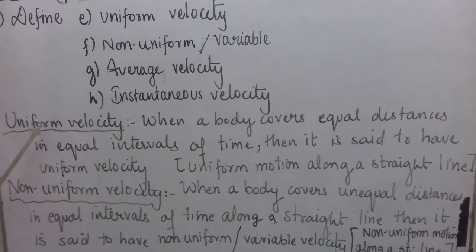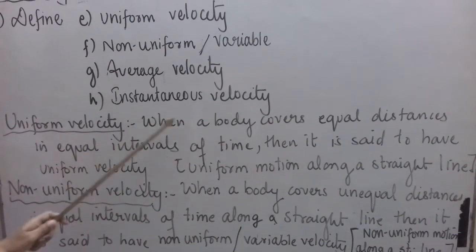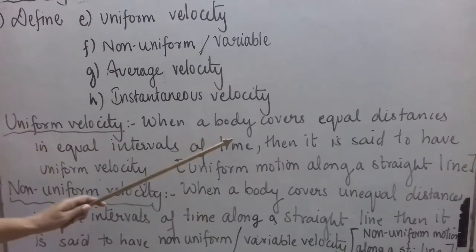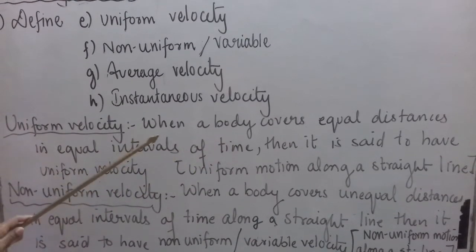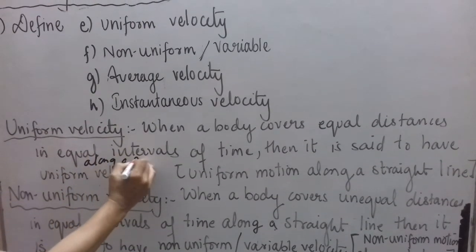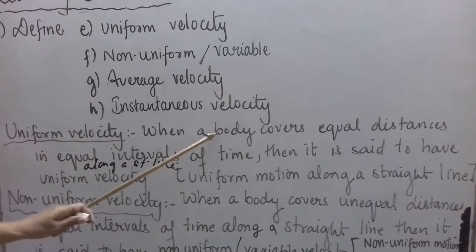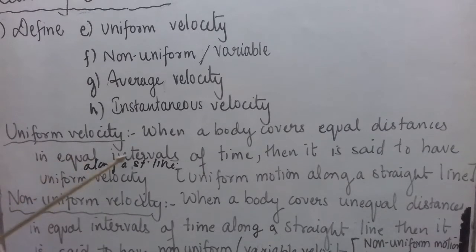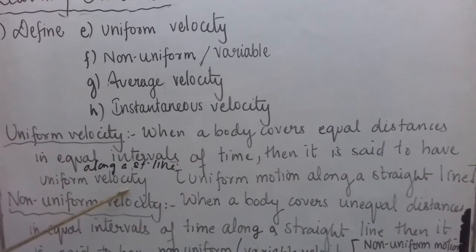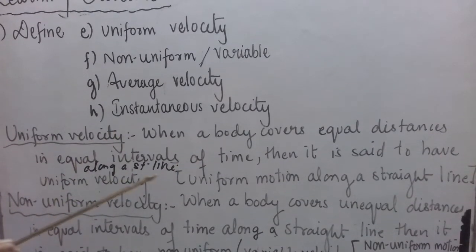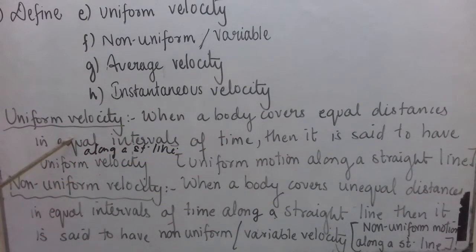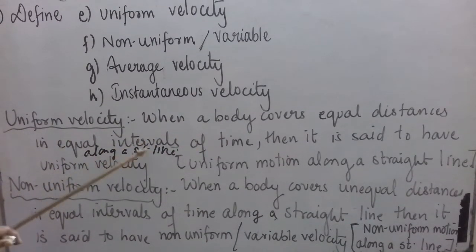Now let us move to the definition of uniform velocity. When a body covers equal distances in equal intervals of time along a straight line, then it is said to have uniform velocity.